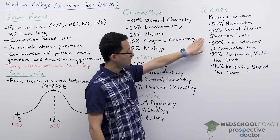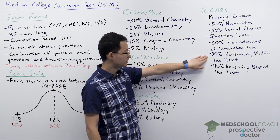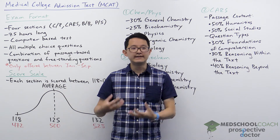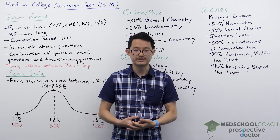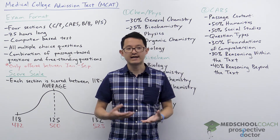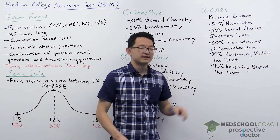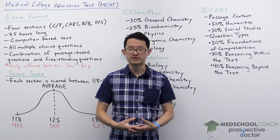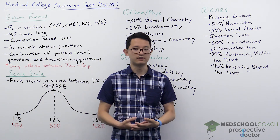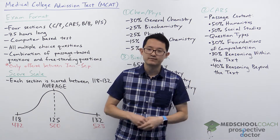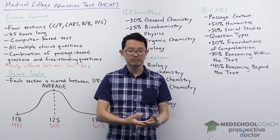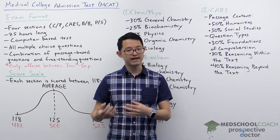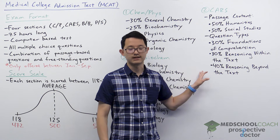The types of questions in the CARS section are 30% foundations of comprehension, 30% reasoning within the text, and 40% reasoning beyond the text. Foundations of comprehension asks whether you understood the text. Reasoning within the text asks you to infer information or analyze how the passage was written. Reasoning beyond the text expects you to extrapolate passage information to new situations, or evaluate how new information affects the arguments made in the passage.